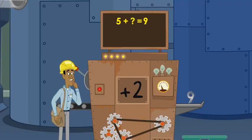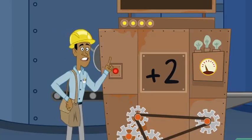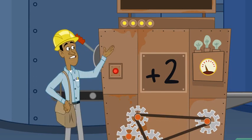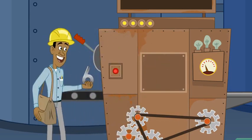That didn't work, did it? Five plus two is definitely not nine. That means this function machine is adding a number that is more than two. Let's try putting in another number.